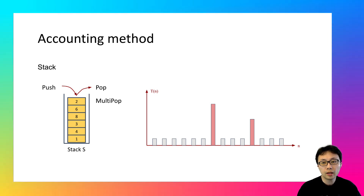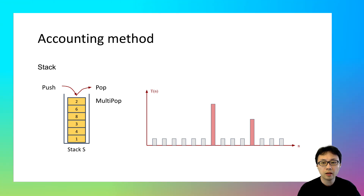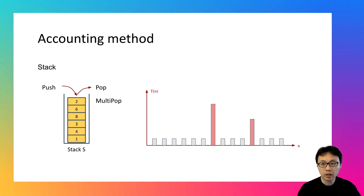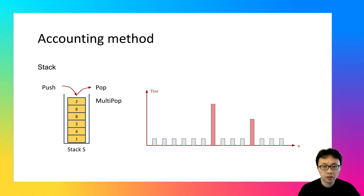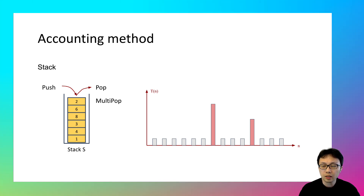Think about it: the worst case happens when you have a multipop operation whose second argument is n, where n equals the stack size. But it has its limit — you can only remove as many elements as you have added using the push operation. When a stack starts empty, you can't keep executing multipop without adding elements first. The worst case can happen only a single time, not always over a sequence of operations. That's why amortized analysis is needed, and that's where the accounting method can help.